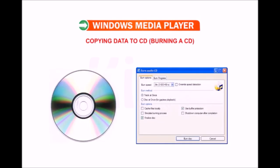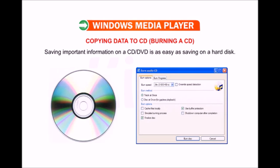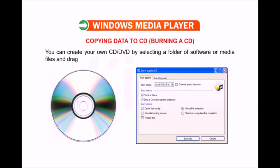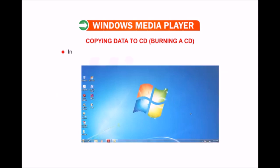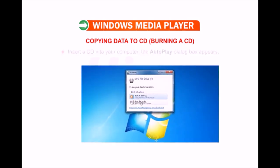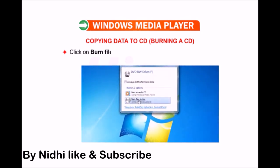Now let us learn how to copy data to a CD — burning a CD. Saving important information on a CD or DVD is as easy as saving on a hard disk. You can create your own CD or DVD by selecting a folder of software or media files and dragging it to the CD or DVD icon in the Computer folder. Insert a CD into your computer; the AutoPlay dialog box appears. Click on the 'Burn files to disk using Windows Explorer' option.